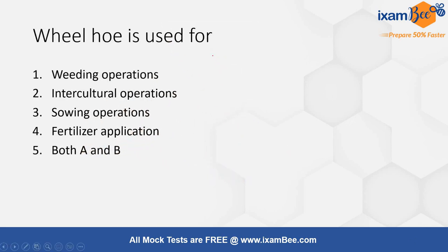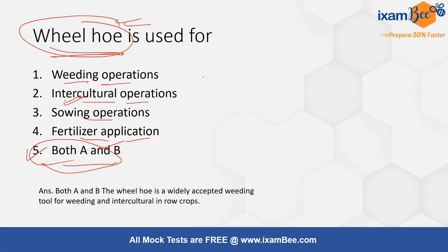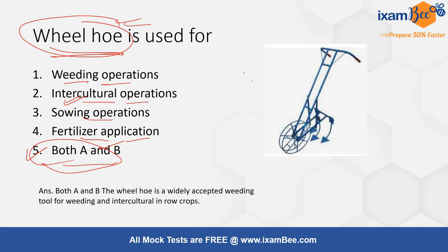The first question is: wheel hoe is used for — options are weeding operations, intercultural operations, sowing operation, fertilizer application, or both A and B. The correct answer is option 5, both A and B. It is used for weeding purposes as well as for intercultural operations in row crops. Here is the diagram of how a wheel hoe looks like.